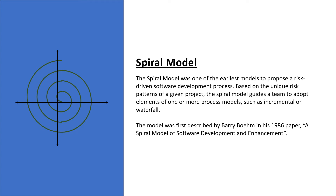The spiral model is a risk-driven software development process model. Based on the unique risk patterns of a given project, the spiral model guides a team to adopt elements of one or more process models. The model was first described by Barry Boehm in his 1986 paper, 'A Spiral Model for Software Development and Enhancement.'